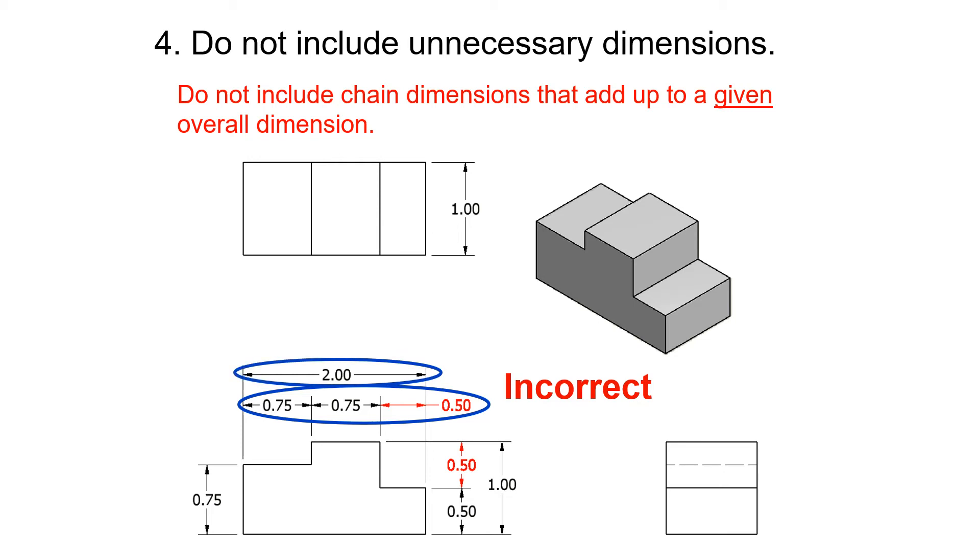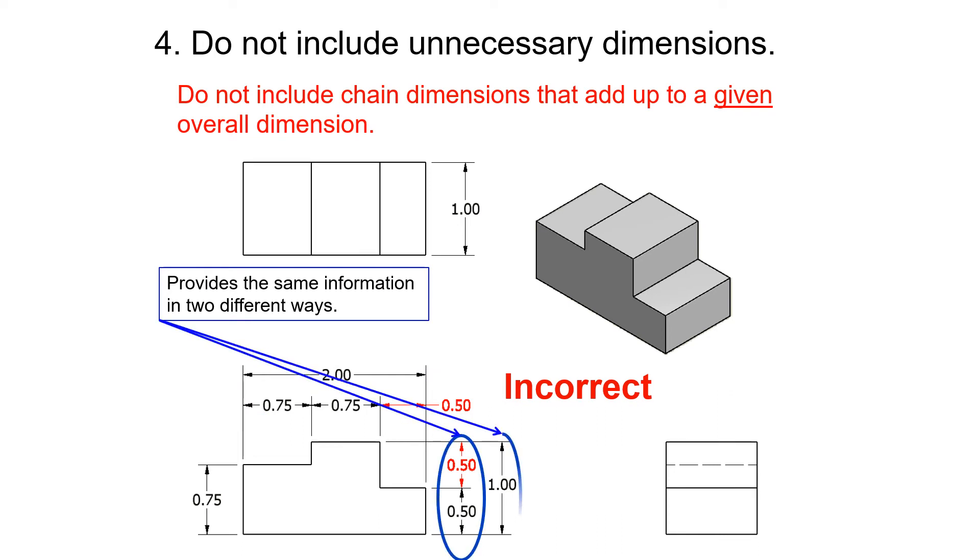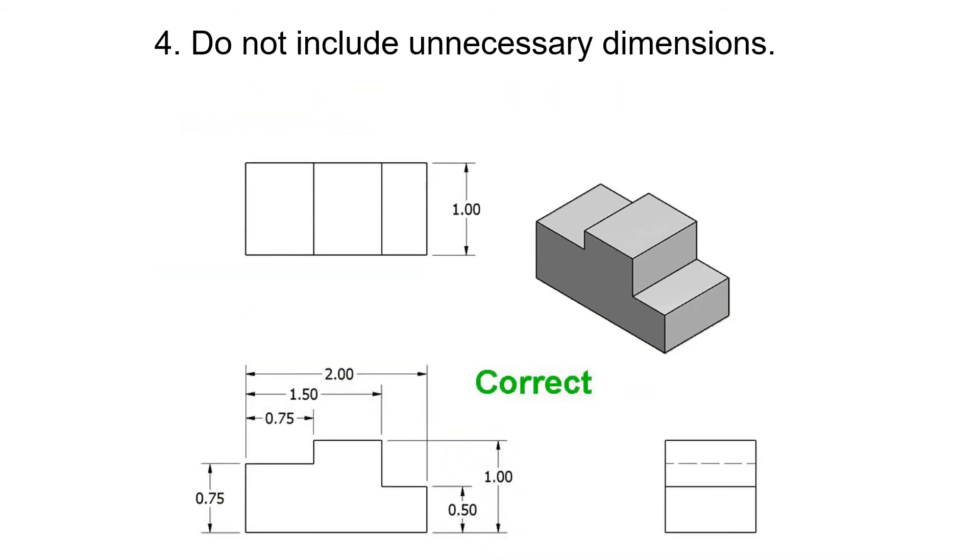You don't actually have to include that 0.05 because if you know that the overall is 2, and then you know 0.75 plus 0.75, you could technically do some subtraction and get to that dimension if you need it. It provides the same information in two different ways. Same with this—if you know that the overall is 1 and you know one of those dimensions is 0.5, you know the other one has to be 0.5. The whole point is to make it as efficient and clean as possible with the fewest dimensions necessary to still be able to know all the dimensions in the shape.